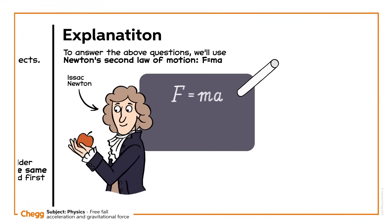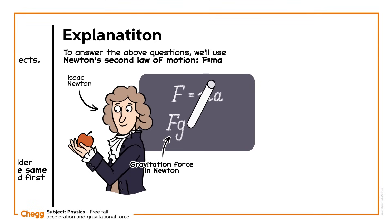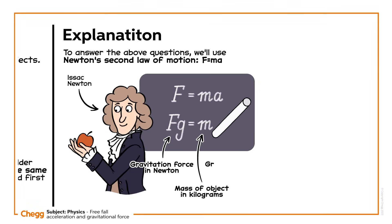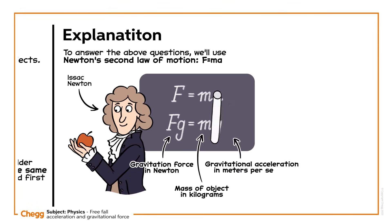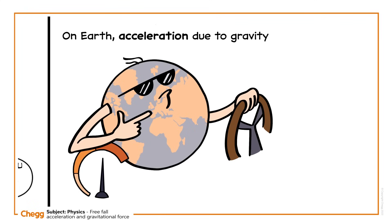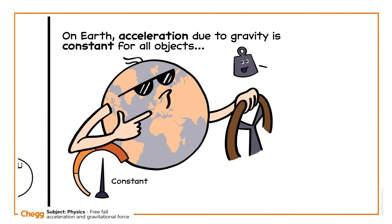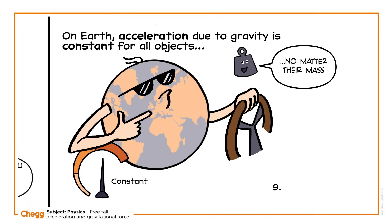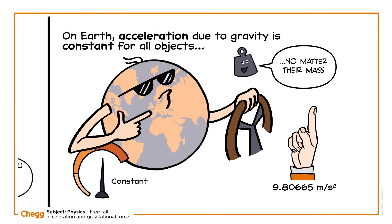The force that drags objects down towards Earth is called the gravitational force. The gravitational force, or Fg, is equal to the mass of the object in kilograms, m, times the gravitational acceleration, g. On Earth, acceleration due to gravity is constant for all objects, no matter their mass. It is defined by standard as 9.80665 meters per second squared, usually rounded to 9.81 meters per second squared.